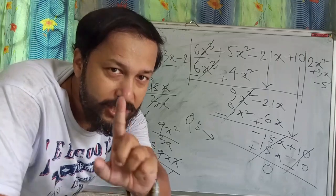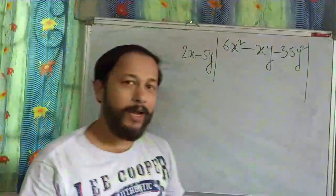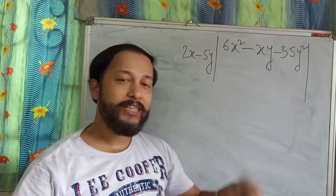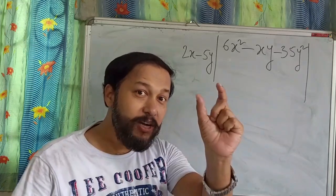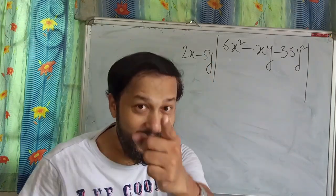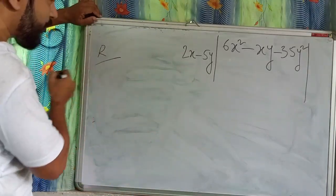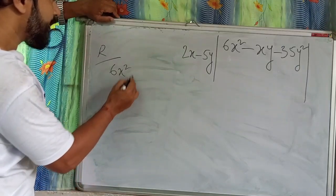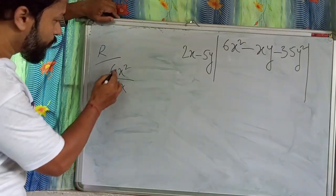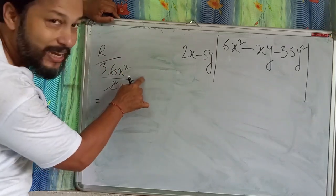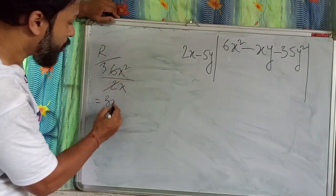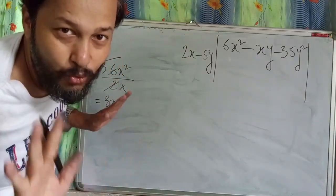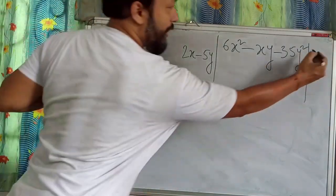I will show you the last sum of this video. In this sum, again we are going to divide this portion by this portion — same rule, first term by first term, written in rough. First term is 6x² divided by 2x. 2 threes are 6, x² is x×x, one x cancels — so I get 3x. We write 3x as the first quotient term.